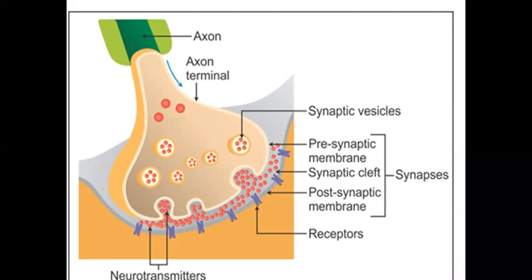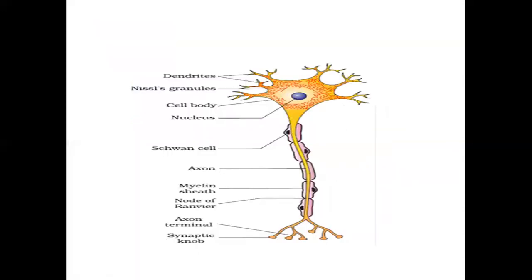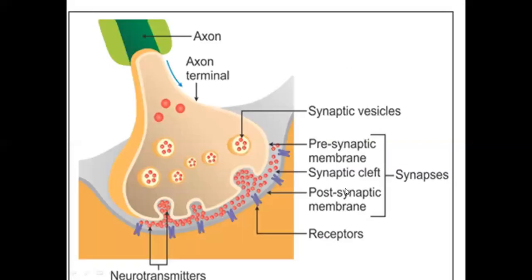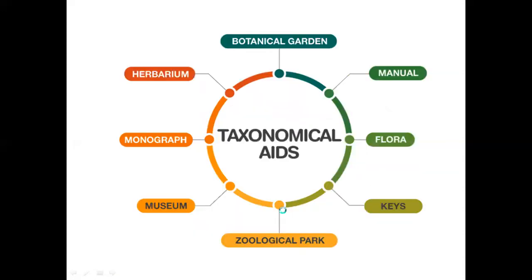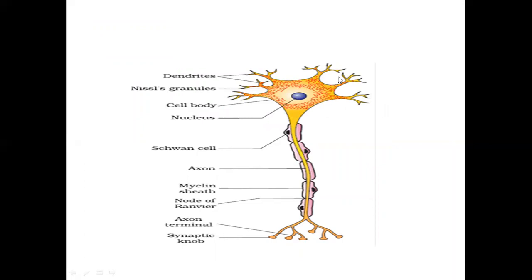First, let's understand axons and neuron structure. In a neuron, at the bottom there is a nerve terminal or axon terminal. This axon terminal synapses with the dendrites of another neuron. One neuron's nerve terminal connects with another neuron's dendrites to form the synapse.